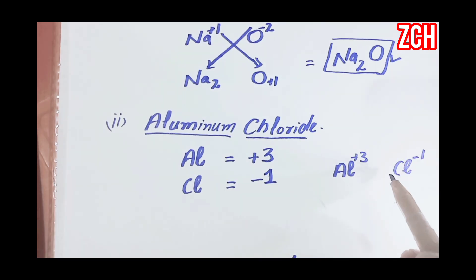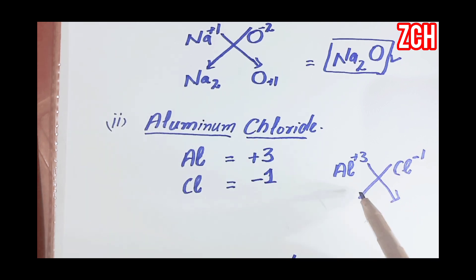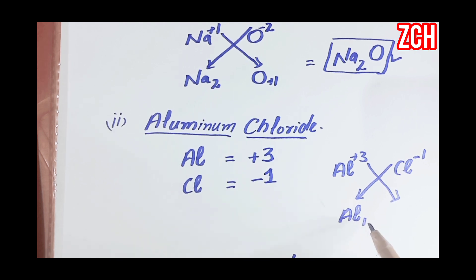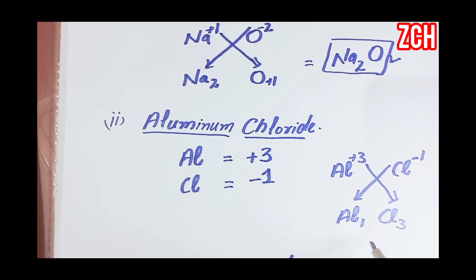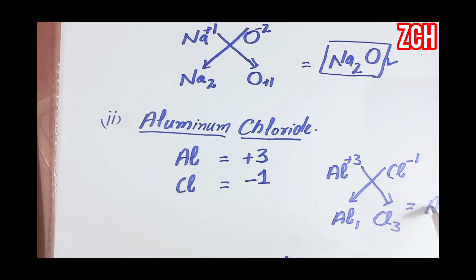Now we will cross their valencies and write the formula. The valency of aluminium is plus three and the valency of chlorine is minus one. We cross their valencies — three comes here with chlorine — so in the final formula we write it as AlCl₃.